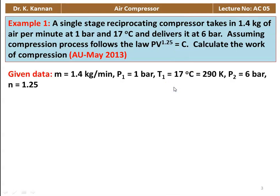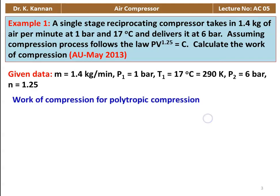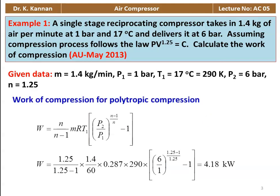We write down the given data: mass of air is 1.4 kg per minute, pressure P1 is 1 bar, temperature T1 is 17 degrees Celsius which is 290 Kelvin, pressure P2 equals 6 bar, and the index of compression n is 1.25. Work of compression for polytropic compression process.